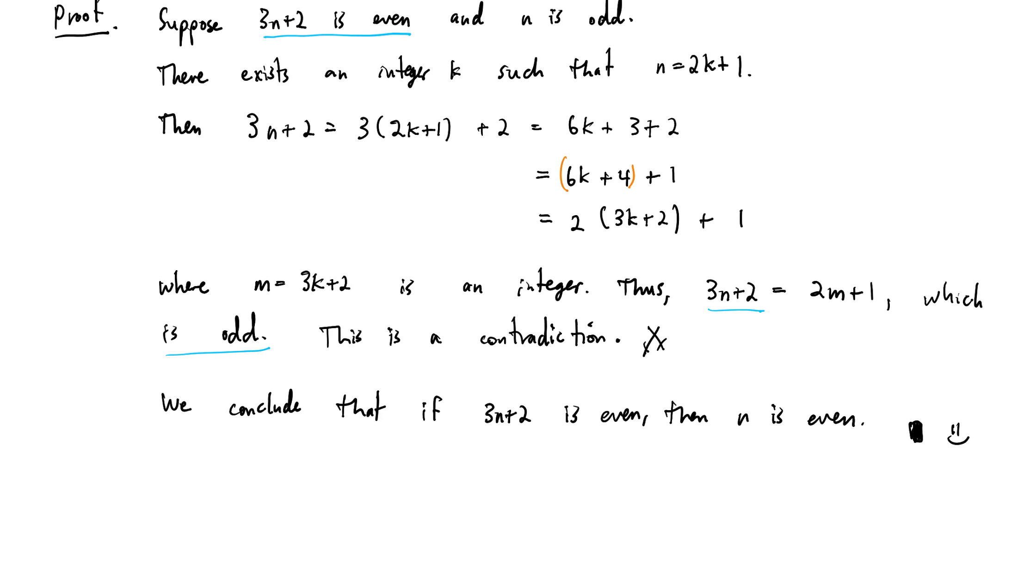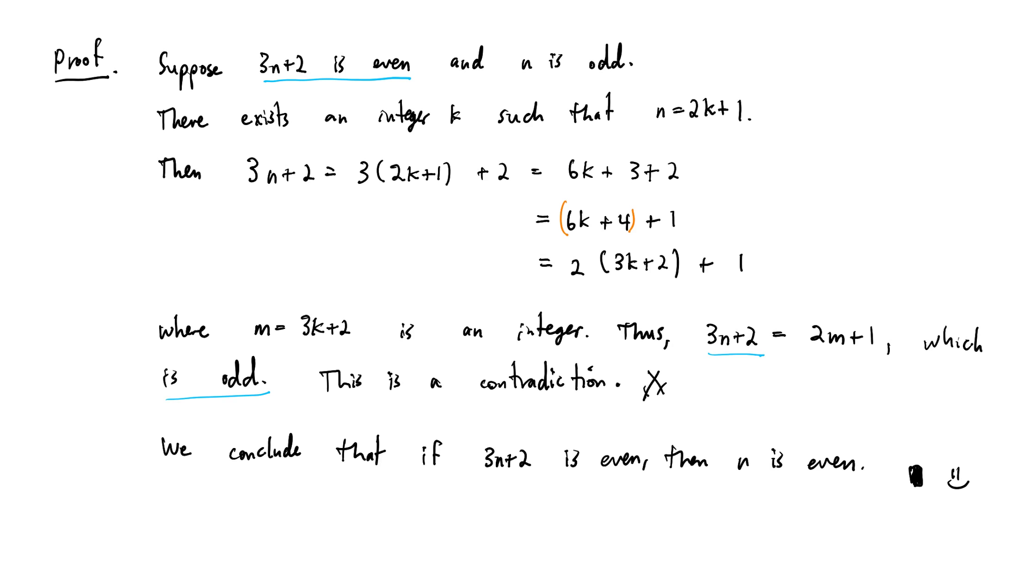So as you study this proof, pause the screen, take a mental image. Make sure you understand why this is contradiction and not some other method. What makes this contradiction as opposed to either a direct proof? We could have done this by contraposition, but that's not the way we did it. We did it by contradiction. So make sure you understand why this proof is by contradiction, where the contradiction happens, and how this argument is different than just applying the contraposition.